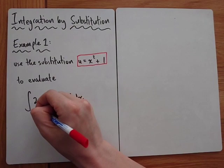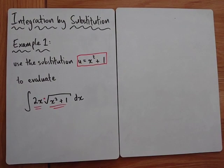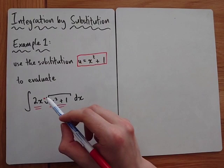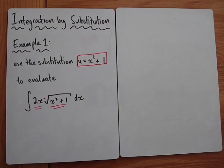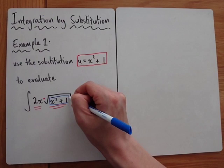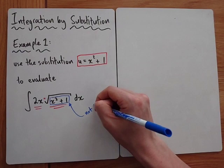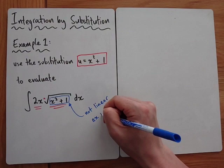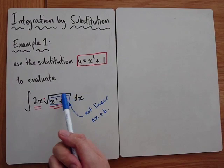If you were given an integral like this in the exam, you would look at it and say: we've got two functions multiplied together, so we might try integration by parts. The big problem is we can't use integration by parts, because if you look at this part of the function — this x squared plus one — it is not linear.